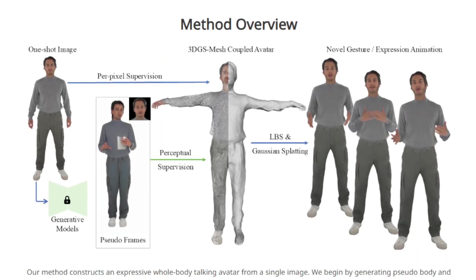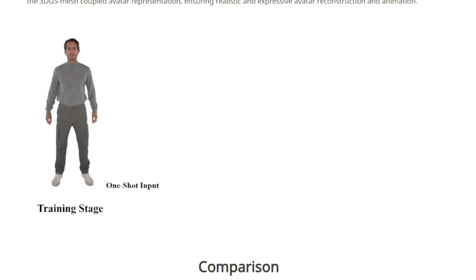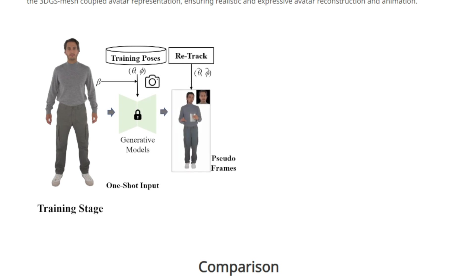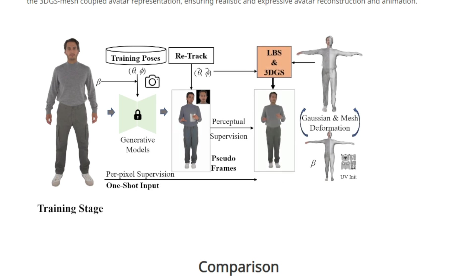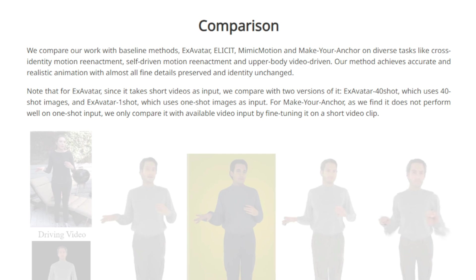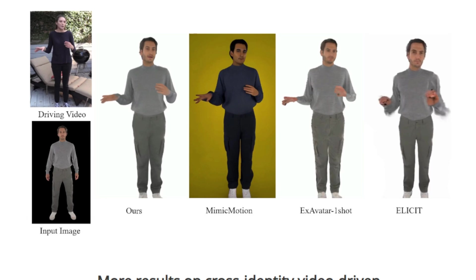This technology addresses significant challenges such as the complexity of dynamic modeling and the adaptation to new gestures and facial expressions not previously captured in the input image. The method utilizes sophisticated pose-guided image-to-video diffusion models, which generate a sequence of video frames from one static image. These frames serve as pseudo-labels providing a framework for the avatar's movement. To manage potential inconsistencies, the researchers employ a hybrid approach combining a 3D skeletal model known as SMPLX with a detailed 3D mesh overlay, ensuring the avatar remains both anatomically accurate and visually compelling.